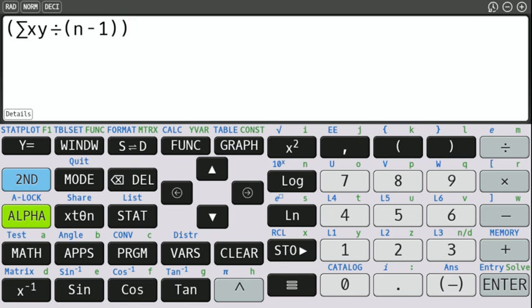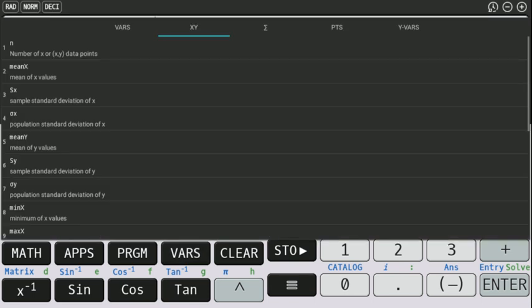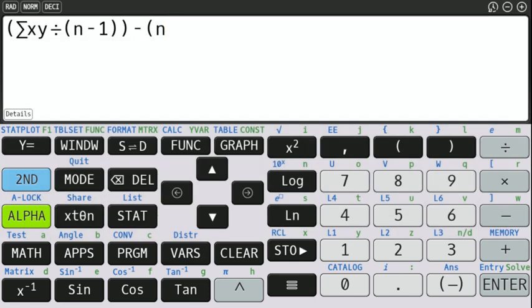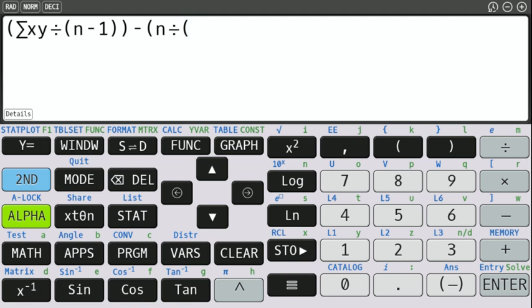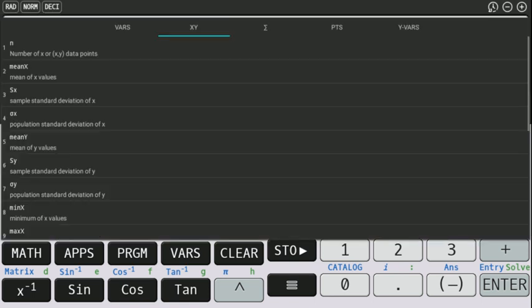Now we're subtracting the product of N over N minus one. So let's get the N back. N divided by, and then again, I need to nest to get order of operations right. I need to nest N minus one in another set of parentheses. So vars N minus one, close that parentheses, and then the other one.